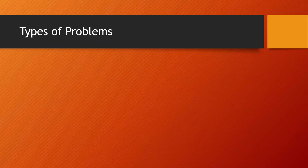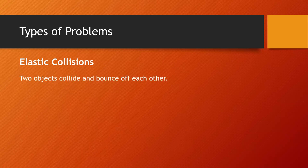There are three types of problems involving conservation of momentum. The first type, which we've already seen, is called elastic collisions. This is when two objects collide and bounce off each other. It could be a rear-end collision, a head-on collision, one object starting at rest, or both starting with motion.